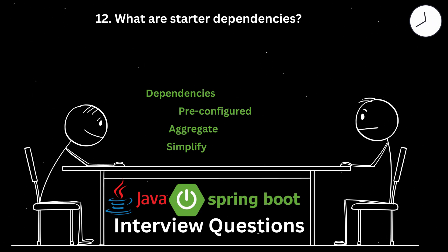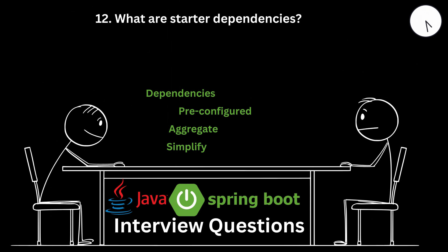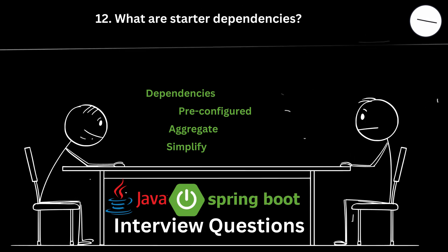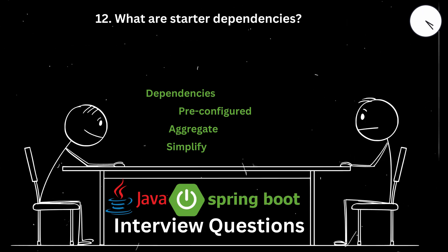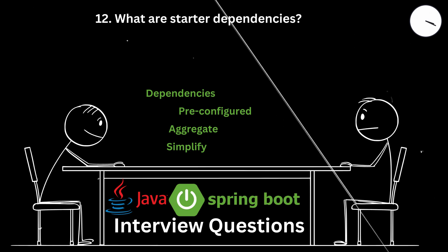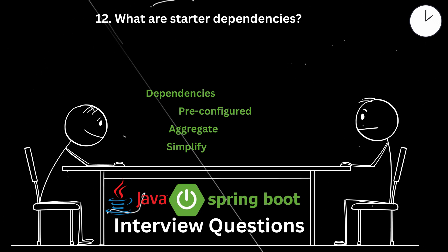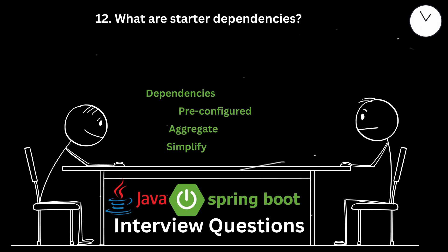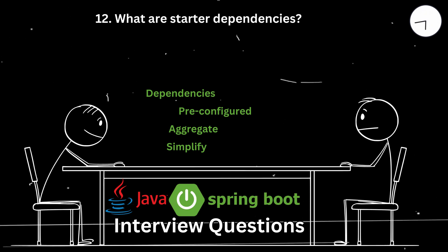What are Starter Dependencies? Starter Dependencies are pre-configured Maven or Gradle dependencies that aggregate common dependencies for specific functionalities such as web, data, and security. They simplify dependency management by bundling related libraries into a single starter dependency. Adding Spring Boot Starter Web to your pom.xml in a Customer Relationship Management system project included Spring MVC, Jackson, and an embedded Tomcat server, providing everything needed to build a web application without manually managing individual dependencies.